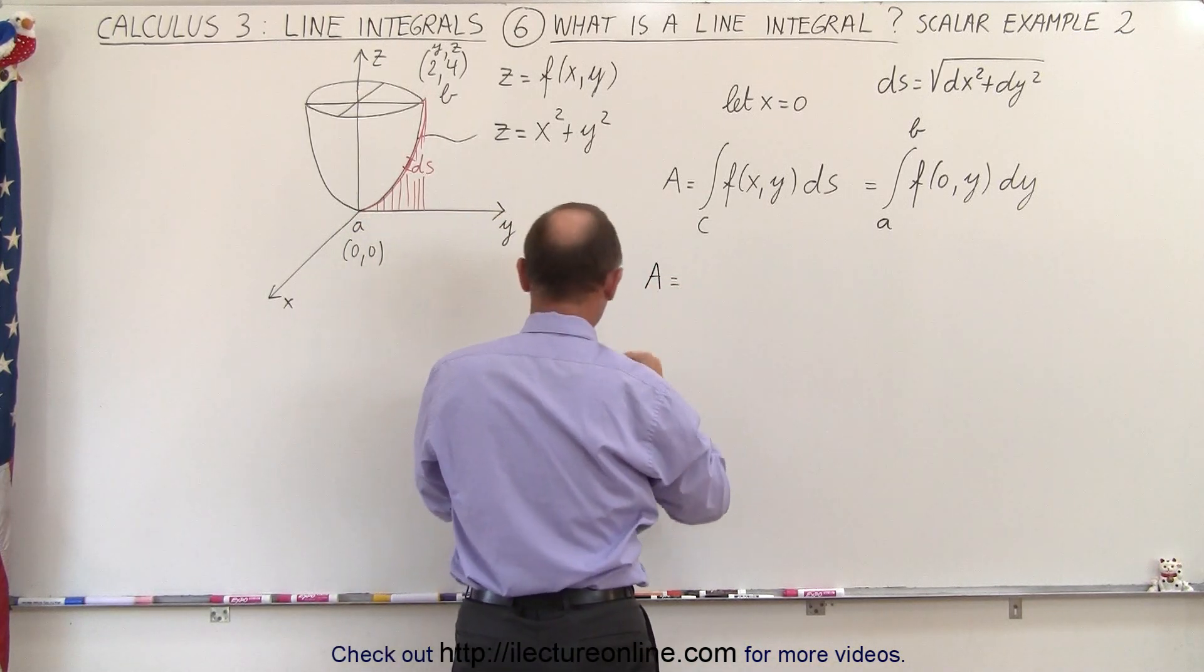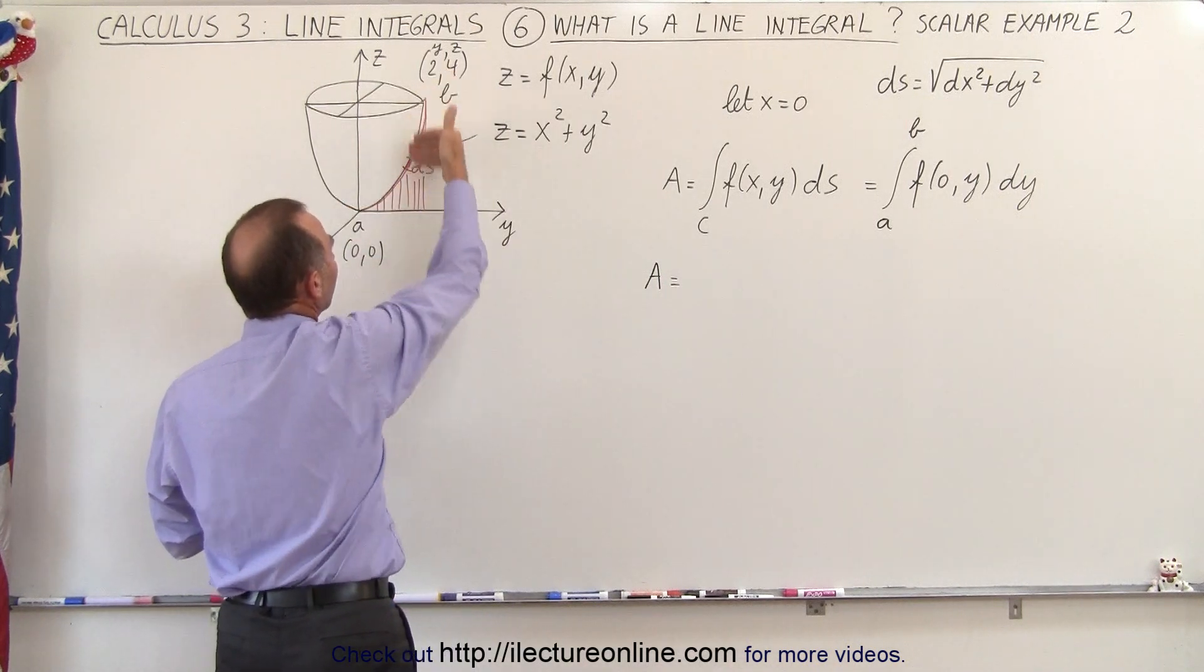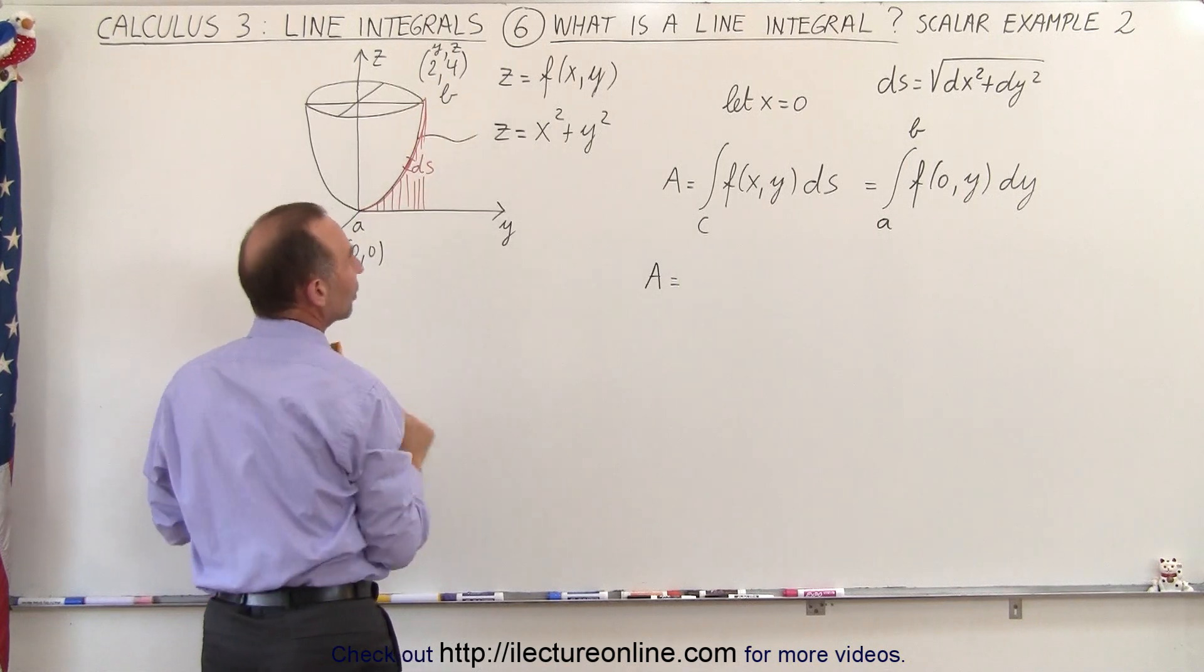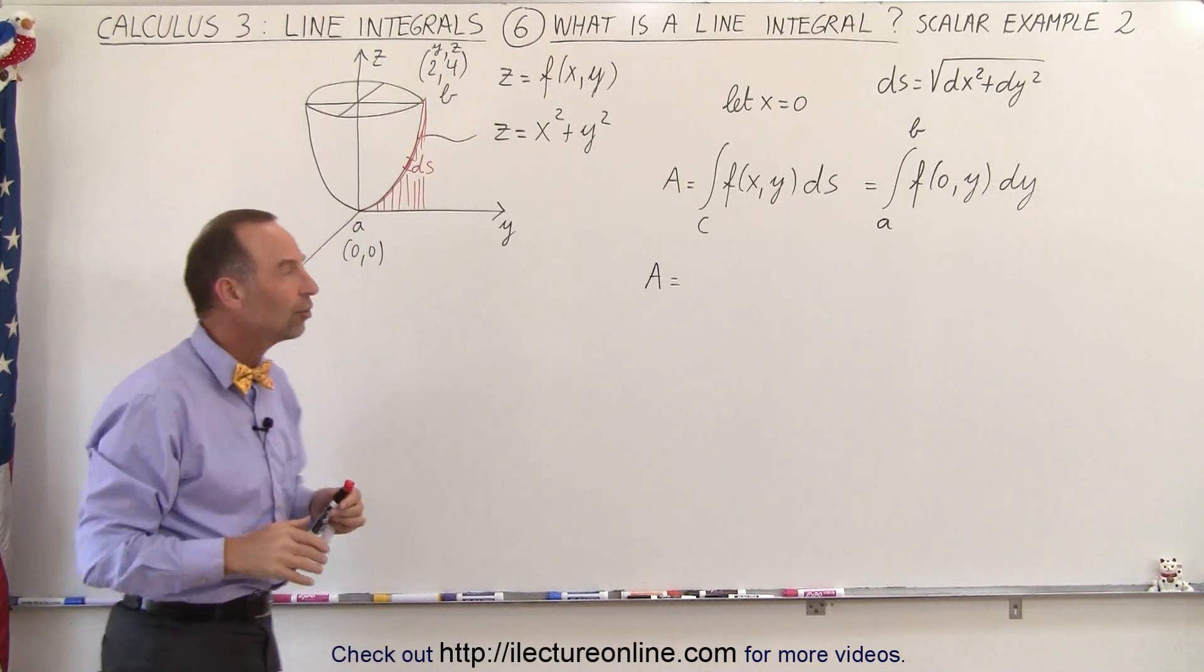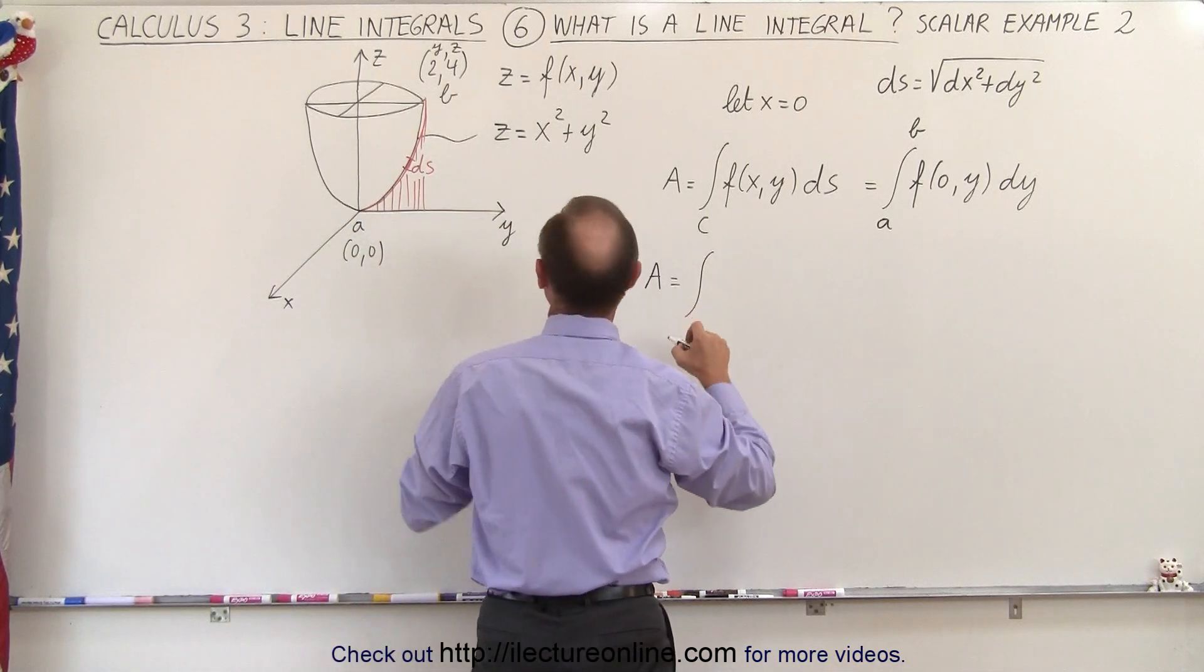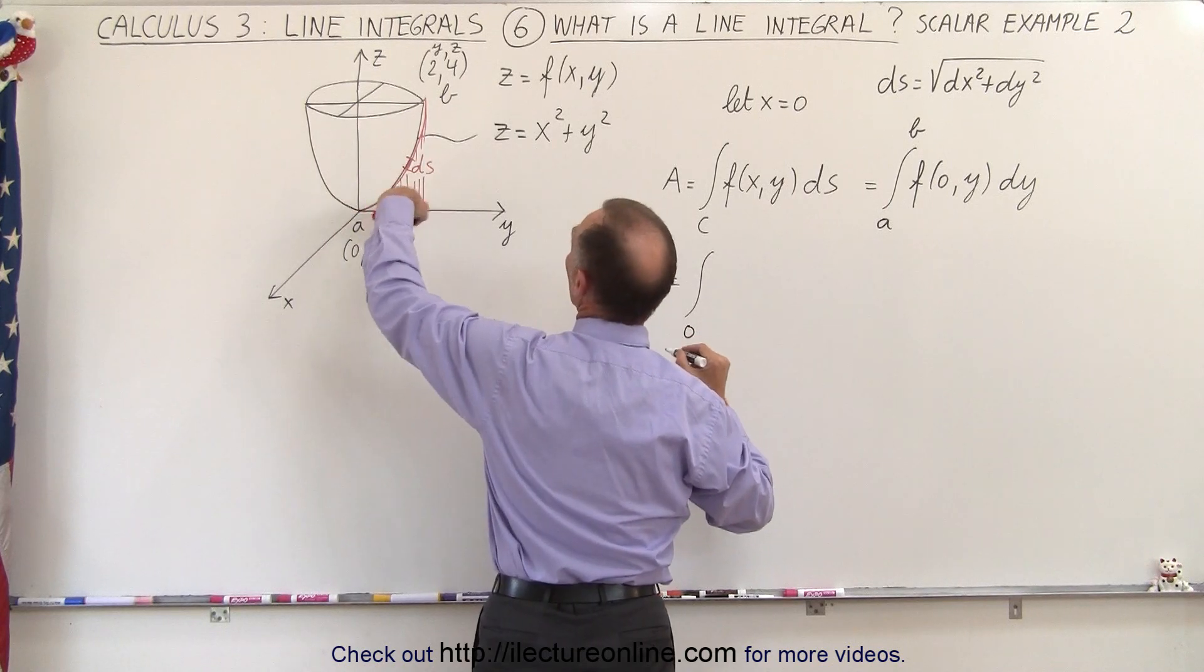So then the area, because remember that the integral will give us the area underneath the curve. Think of it as a curtain hanging down from that edge of that paraboloid, and it's this area that we're looking for using that line integral. So this is going to be equal to the integral from y equal 0 to y equal 2.